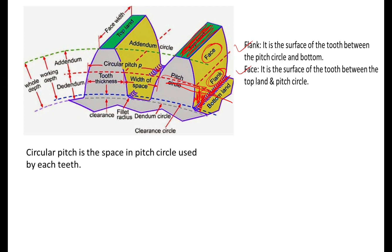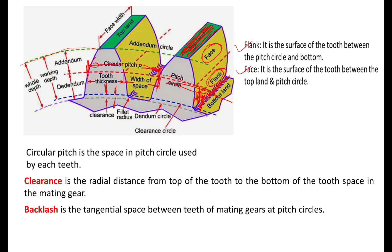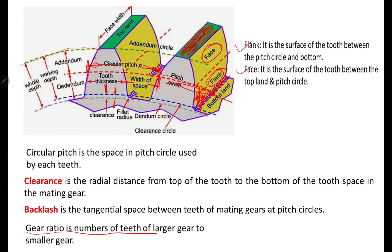Circular pitch is the space on the pitch circle used by each tooth. Clearance is the radial distance from the top of the teeth to the bottom of the tooth space in the mating gear. Backlash is the tangential space between the teeth of mating gears at the pitch circle. Gear ratio is the number of teeth of the larger gear to the smaller gear — similar to velocity ratio.